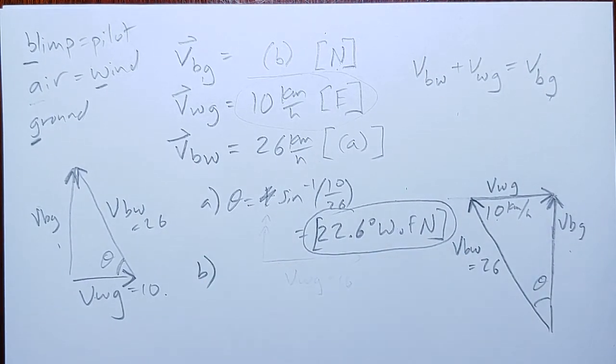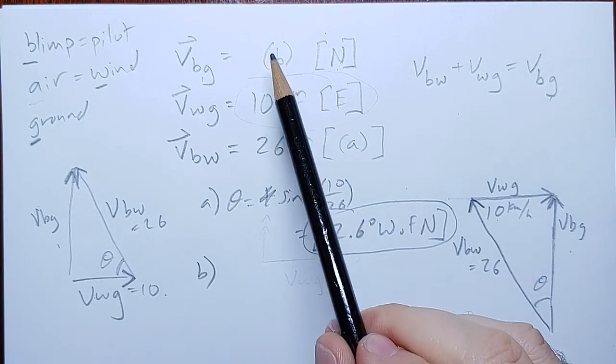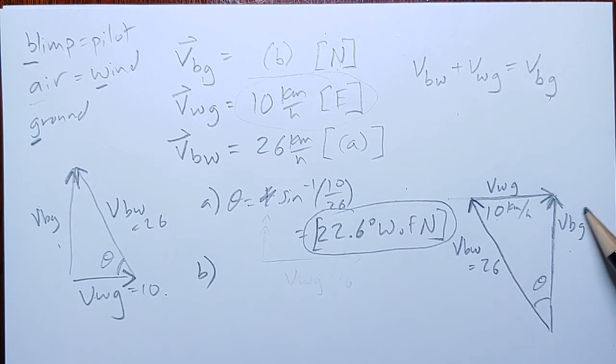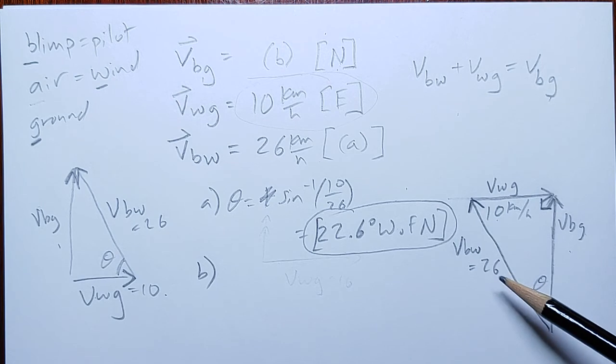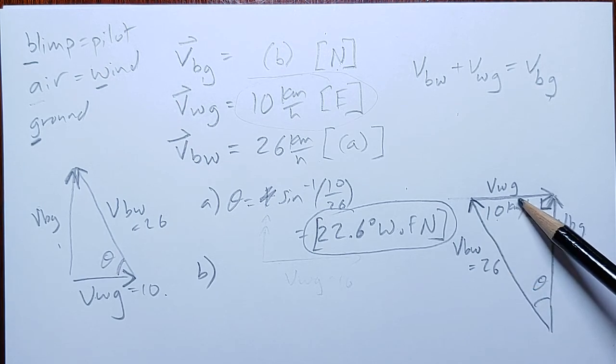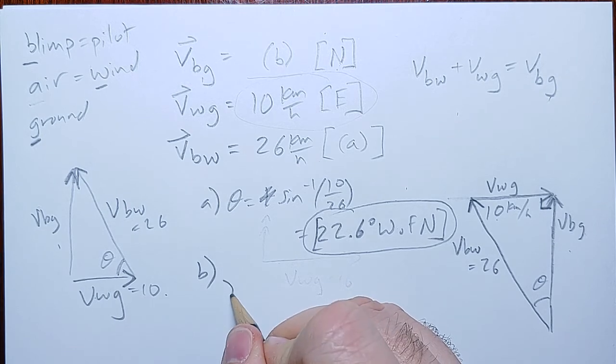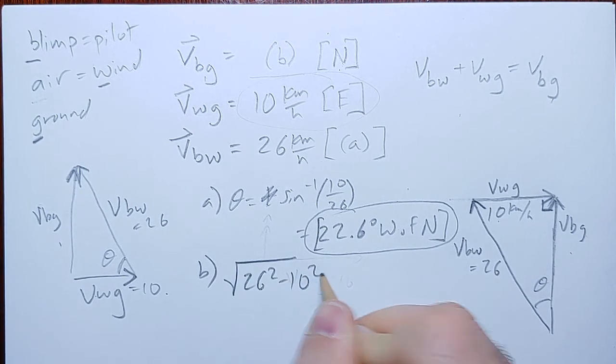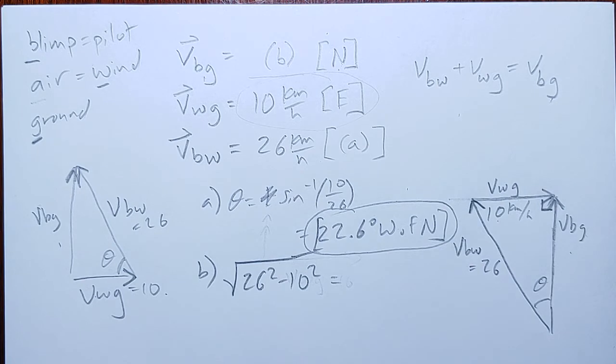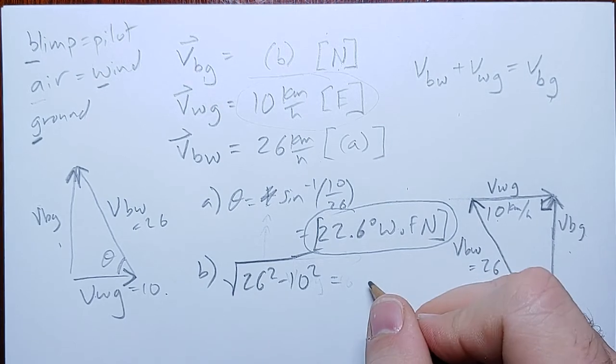For part b, we wanted to know how fast the blimp was traveling relative to the ground. So we want the magnitude of vbg, that is, it's a right triangle, but it's not the hypotenuse. We use the Pythagorean theorem, but it'll be hypotenuse squared minus the other side squared equals this side squared. So 26 squared minus 10 squared root is going to be 24.